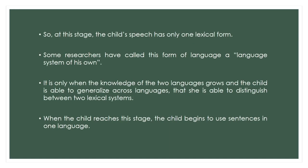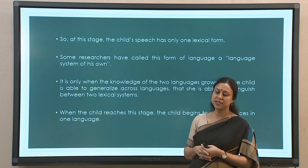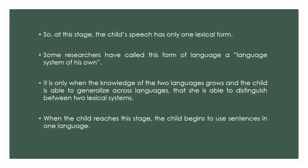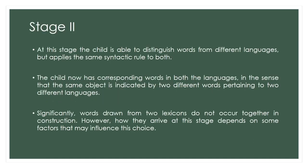At this stage, because of these interesting manipulations of the lexicon, many researchers have said that children at this stage have a language system of their own. It is when the knowledge of two languages grows in the child and the child is able to generalize across languages that they start distinguishing between the lexicons of the two languages — and that is when stage two starts. At stage two they understand that different words referring to the same object come from different languages, but the choice of word depends on the context of learning. A very interesting thing here is that words drawn from two lexicons do not occur together in constructions, unlike stage one.